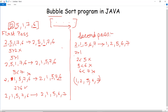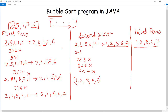We know the array is already sorted, but the algorithm does not know if the process is completed. So the algorithm will traverse the full array again in a third pass, checking elements 1, 2, 5, 6 and 7. It checks 1 with 2, 2 with 5, 5 with 6, and 6 with 7. Since all are in order, the array is confirmed sorted. After this pass, the algorithm recognizes that the goal is completed and the sorting process is done.